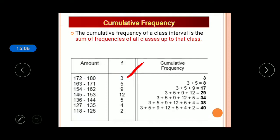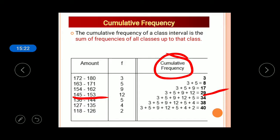Cumulative frequency tells how many observations are below the upper limit of a particular class. For example, if the cumulative frequency of the class 145 to 153 is 29, it means there are 29 observations less than 153 in the data. Cumulative frequency tells the number of observations less than the upper limit of that class.